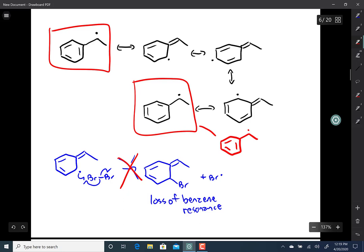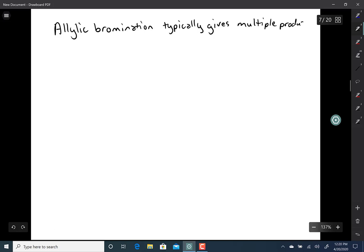It turns out only these two resonant structures react with the bromine. That's because if any other resonant structure reacts with the bromine, you end up with a loss of benzene resonance, and this does not occur.